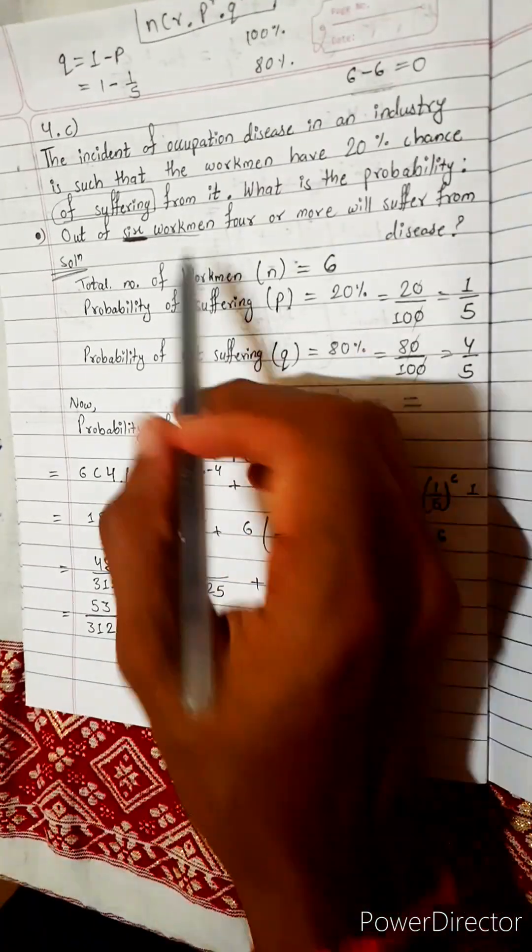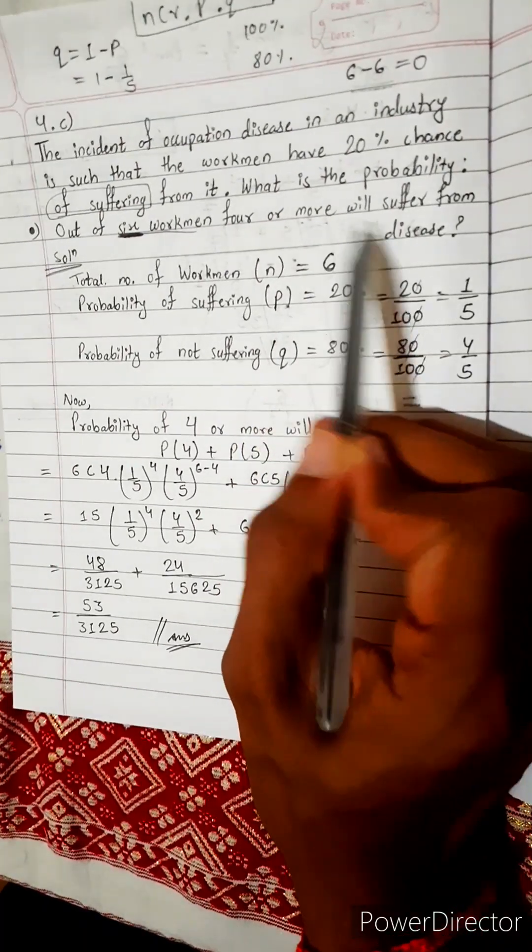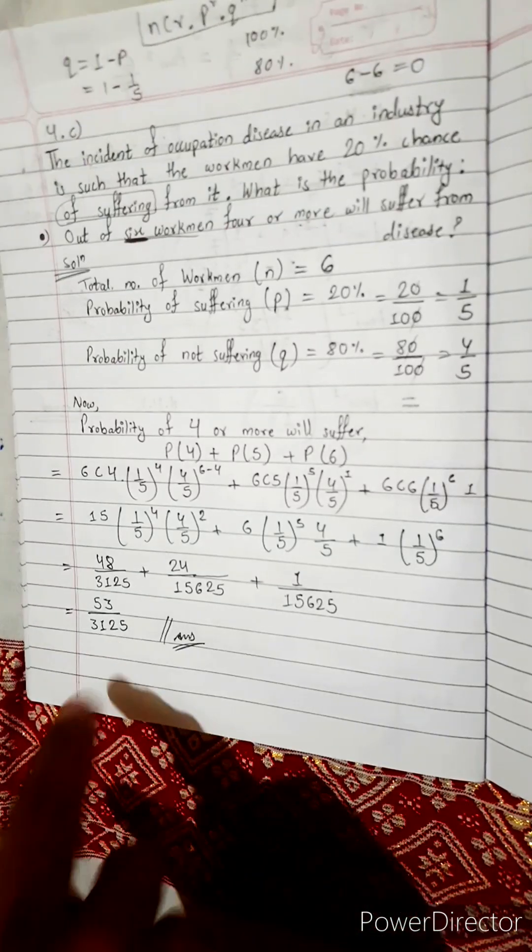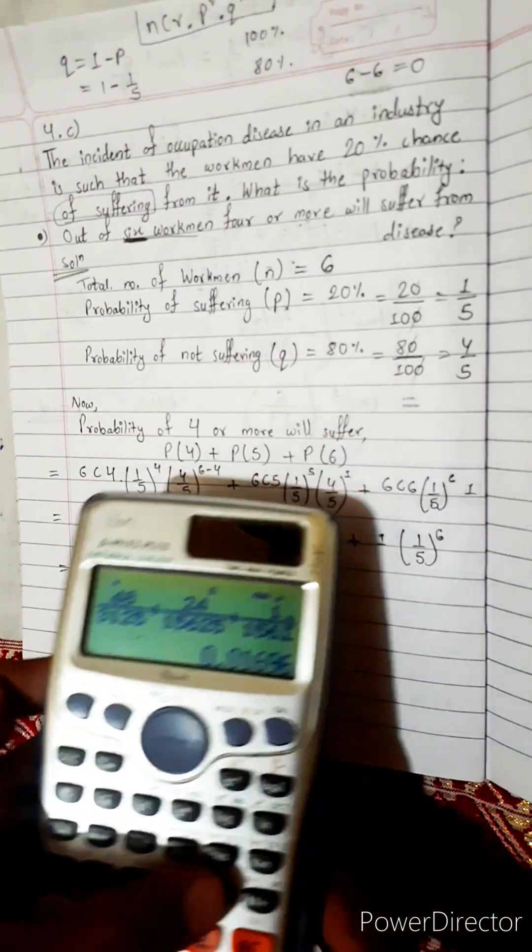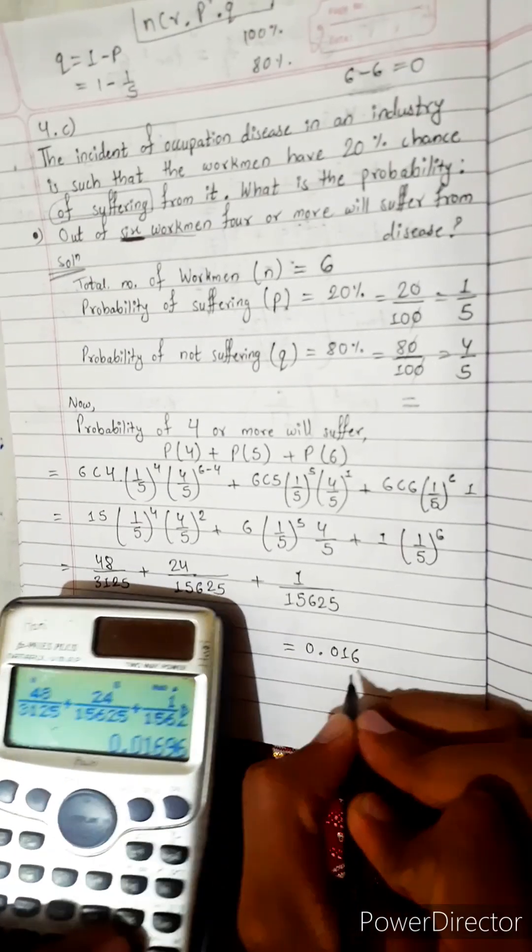So the probability of 4 or more men will suffer from the disease out of 6, it is 53 by 3125. Now let's check. This is very less probability, less than 1, 0.016. It means very very less.